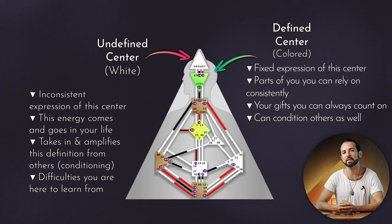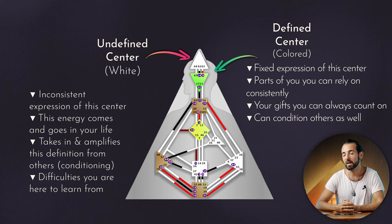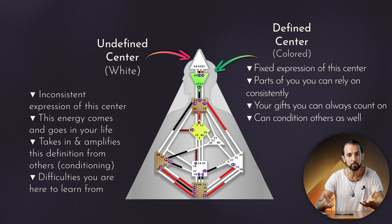A defined center can also condition other people when they have the same center in white or undefined. An undefined center is an inconsistent expression — it doesn't mean you don't have it, it means it comes and goes. In the case of the Ajna center, the third eye, sometimes you remember things, sometimes you don't; sometimes you can structure your thoughts very accurately, and sometimes you lose that capacity. This might happen with certain people around you — you're super expressive with one friend but don't have that capacity with another group. That might be because you have an undefined center.